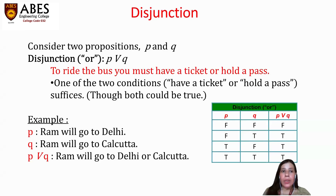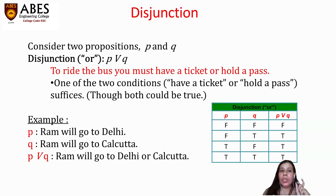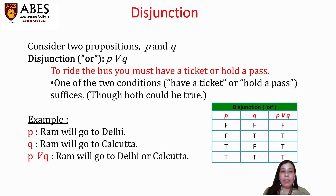Next is disjunction. Consider two propositions P and Q; the disjunction is represented as P or Q. For example, 'To ride the bus you must have a ticket or hold a pass' — one of the two conditions must be true. So even if one condition is true, the whole compound proposition is also true, and both can be true as well. Another example: P is 'Ram will go to Delhi' and Q is 'Ram will go to Calcutta.' Then P or Q is 'Ram will go to Delhi or Calcutta.'